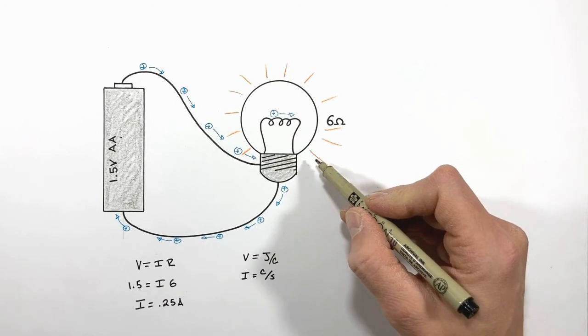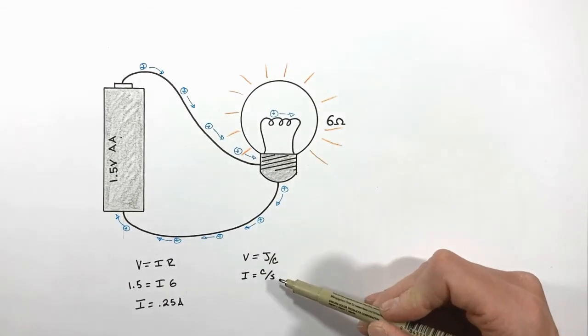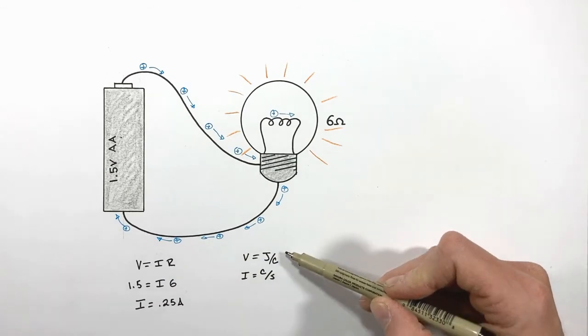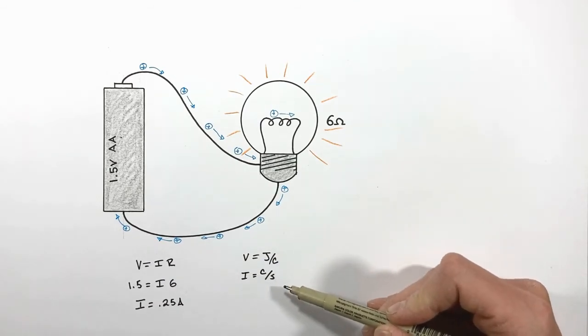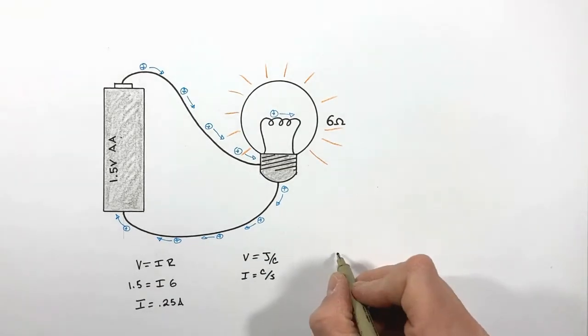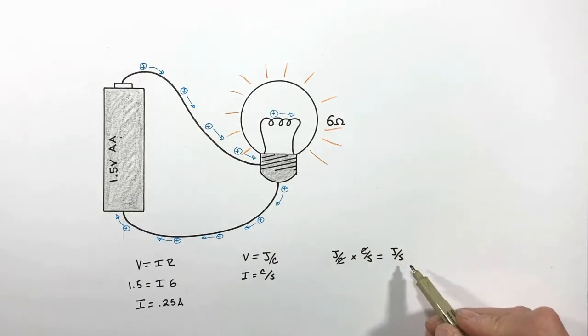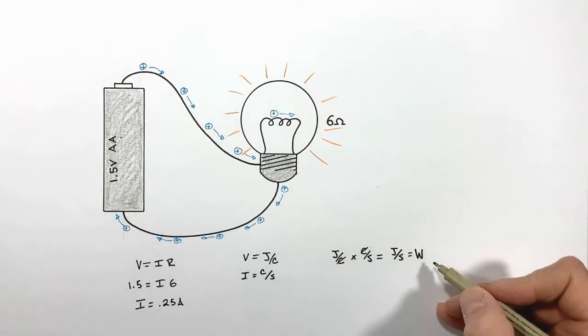To figure out just how much power this light bulb is using, what we really need to do is take a look at voltage and current for what they really are—that is, joules per coulomb and coulombs per second. And in looking at the units, you can see that if we multiply these two together, we're left with joules per second, which is what we refer to as a watt or the units of power.